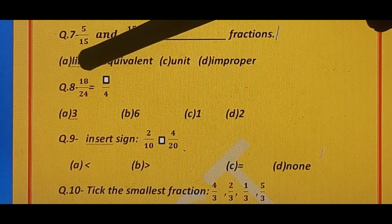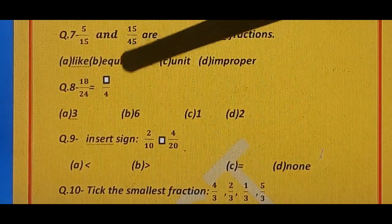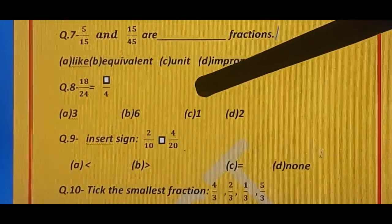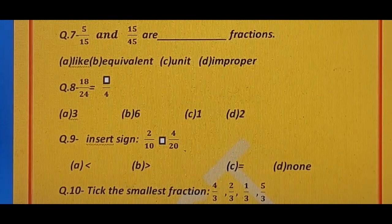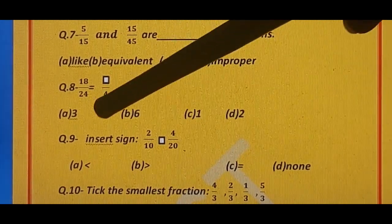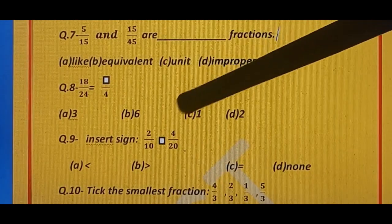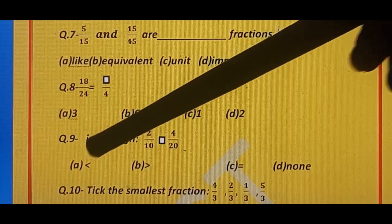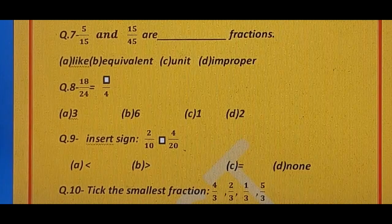Question number 8. 18 upon 24 is equal to dash upon 4. Options are: A) 3, B) 6, C) 1, and D) 2. Question number 9. Insert sign: 2 upon 10 dash 4 upon 20. Options are: A) less than, B) greater than, C) equal, and D) none.